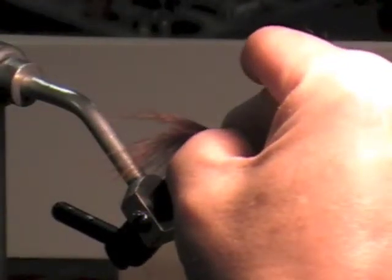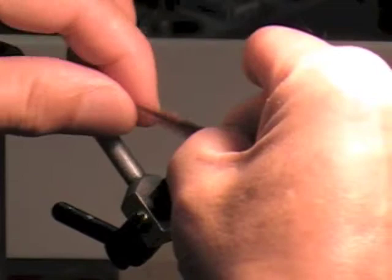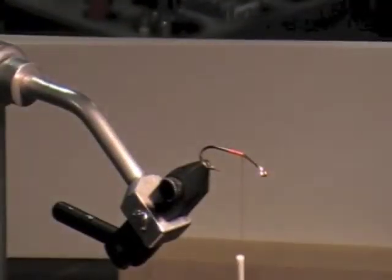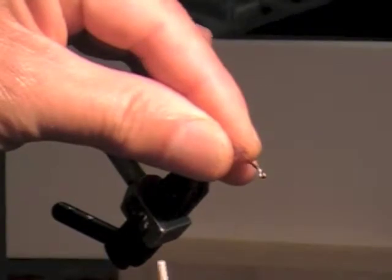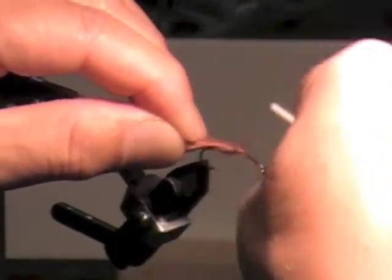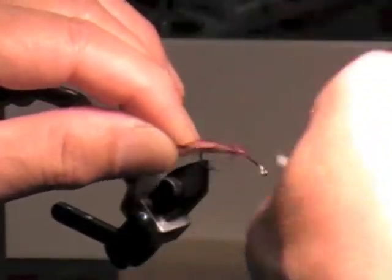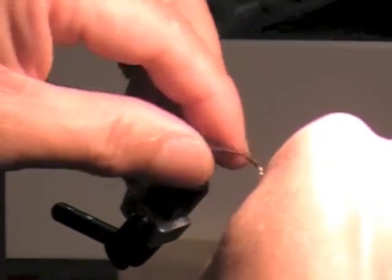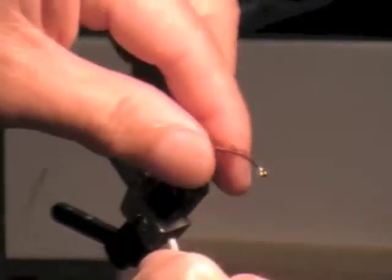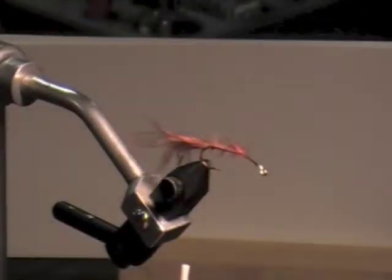So that one and a half times the length of the shank is sticking off the back end. Can you see that there? So that's where I'd be tying it in right there. I'll clip that excess portion off. Tie it in right there and as I'm wrapping backwards with it I hold the tail up a little bit so that the marabou remains on the top of the hook. Go all the way back here to the bend and stop at the end of the shank.